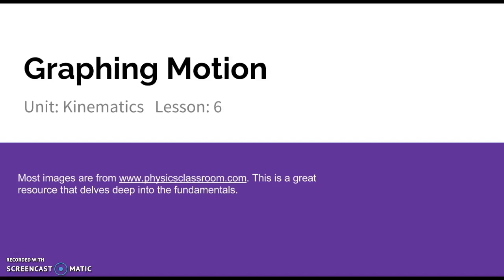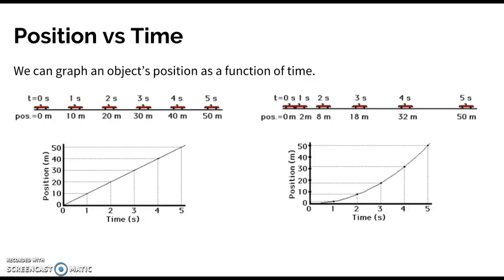Hi everyone. Today I want to talk about graphing motion. We can have a position versus time graph, which graphs an object's position as a function of time. Looking at the situation on the left, we have a car that's changing position every 10 meters every one second.